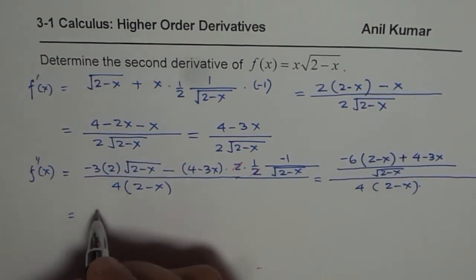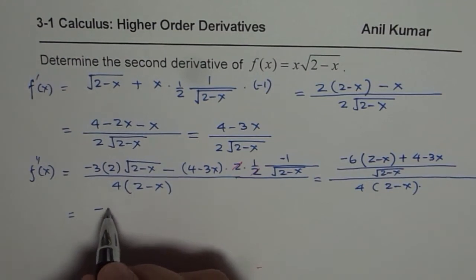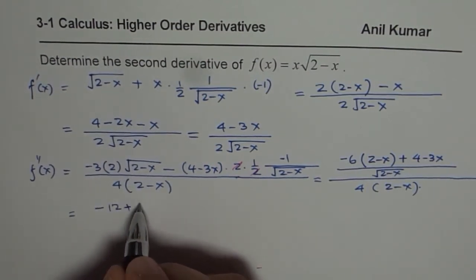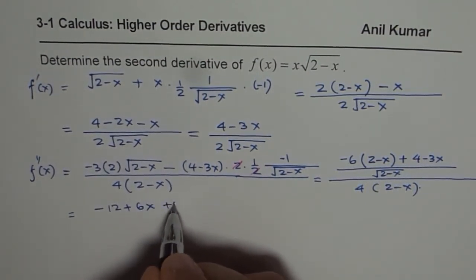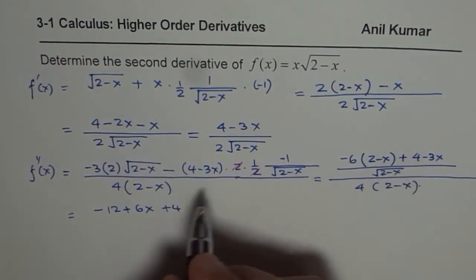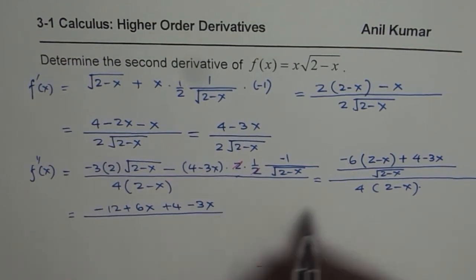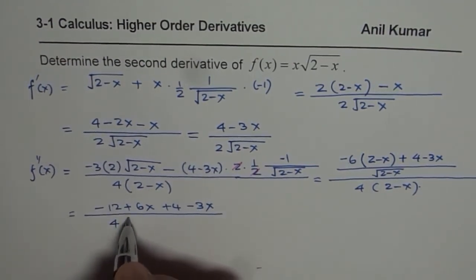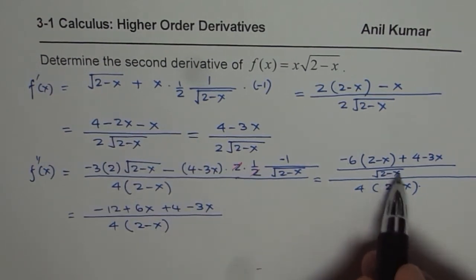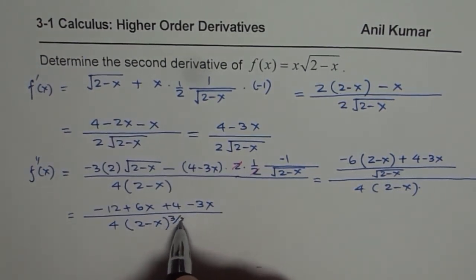So here we have minus, open the bracket, minus 12 plus 6x plus 4 minus 3x. That is the numerator and in the denominator, 4 times within brackets 2 minus x to the power of half plus 1 which is 3 over 2.